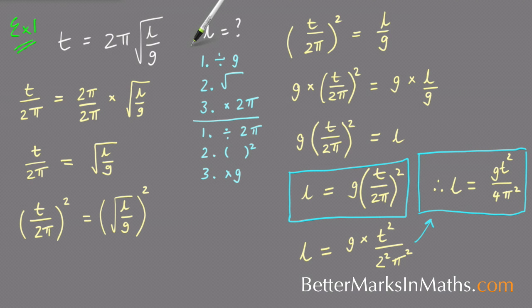Welcome to this lesson on how to transpose a formula that has square roots in it, such as this one here: t equals 2π square root l on g.